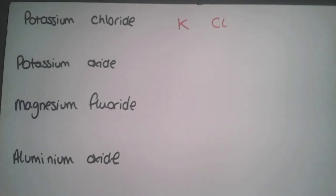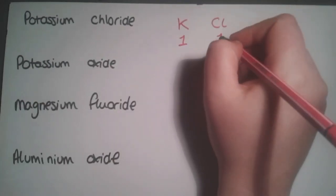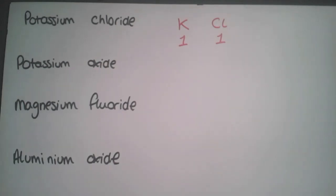Using this method, underneath the two elements you write down their valency. The valency for potassium is one, as it's in group one with one outer electron. For chlorine, the valency is also one—it's in group seven, needs one extra electron to have a full outer shell, and therefore can form one bond. Once you've written the valencies underneath, you swap them over.